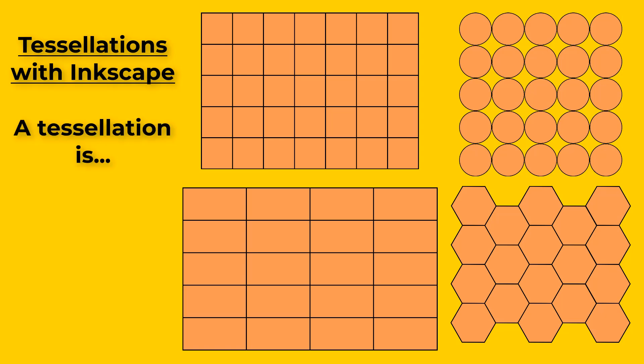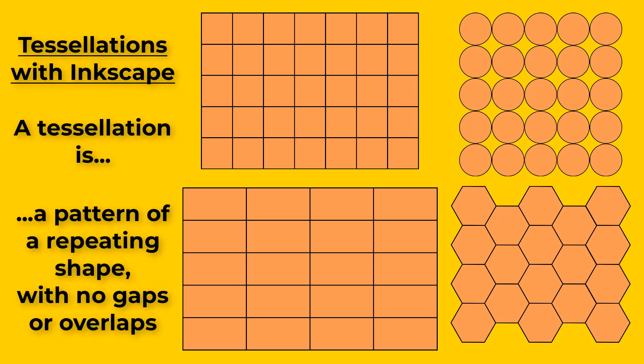A tessellation is defined as a pattern of a repeating shape that has no gaps or overlaps. The shape that we start with is very important because it has to be able to tessellate all on its own. So a square can tessellate. With a circle we have gaps so that cannot tessellate. A rectangle can tessellate and a hexagon can also tessellate. There are just a few other geometric shapes that will also work as well.